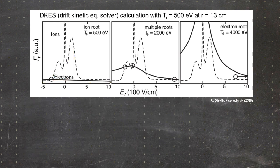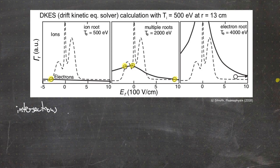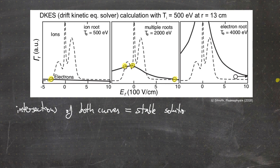Looking again at this drawing, we see there are intersection points — for example here, or here, or here, and somewhere on the right if we extend the curves. The intersection points of both curves are the stable solutions for the ambipolar radial electric field. Only if we have a radial electric field of this order do we have a stable solution.